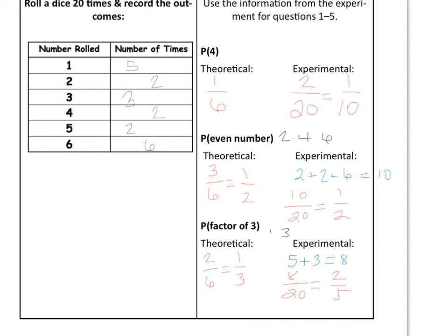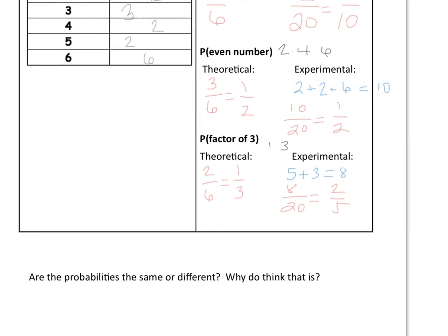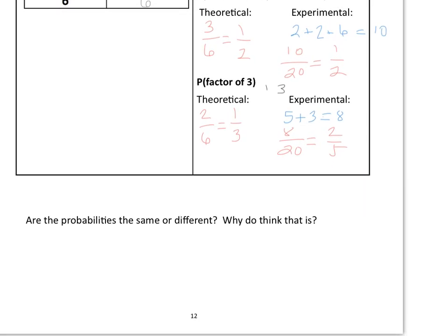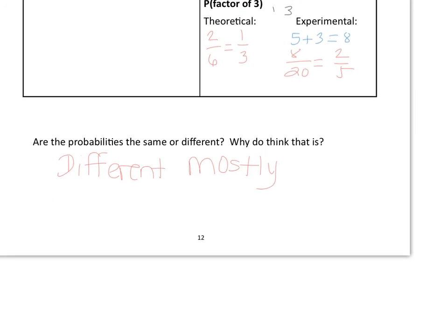Now we have to use our experiment to answer: were our probabilities the same or different, and why? For one of them it was the same, but most of them were different. The reason is what should happen isn't going to be what actually happens.